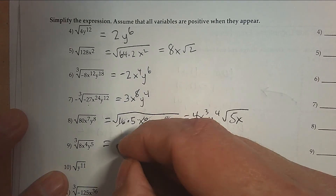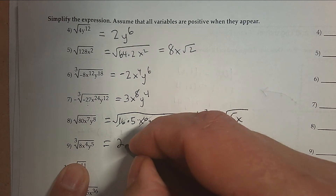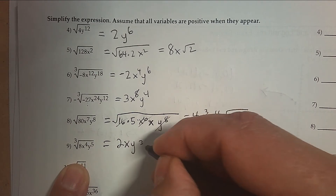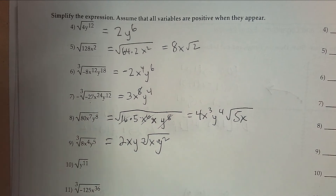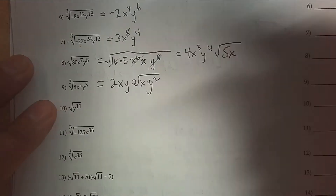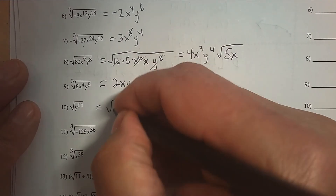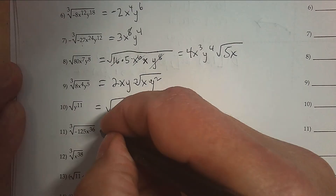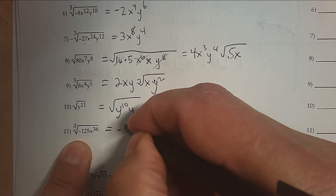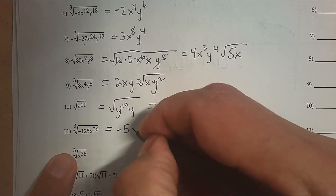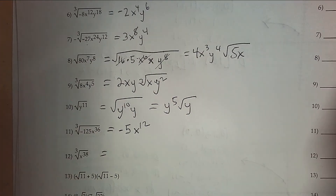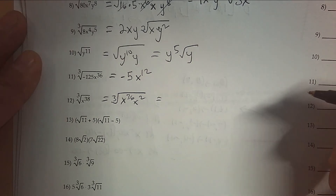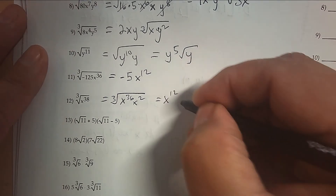The cube root of 8 is 2. The cube root of x to the 4th — that's 1x, but 1x will be left behind. The cube root of y to the 5th — that's 1y, but 2y's will be left behind. So what's left behind is x and 2y's. The square root of y to the 11th — that's really y to the 10th times y, so that's y to the 5th, and what's left behind is the square root of y. The cube root of −125: what number cubed is that? That's −5. Divide the exponent by 3. The cube root of x to the 38th — what multiple of 3 is close to 38? That's 36, so divide by 3 is x to the 12th, and then you have the cube root of x squared.